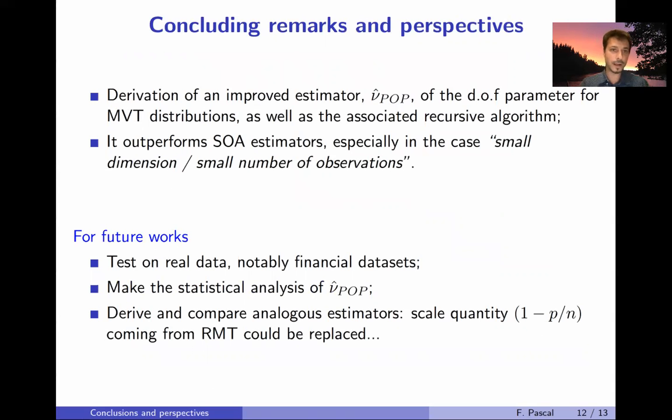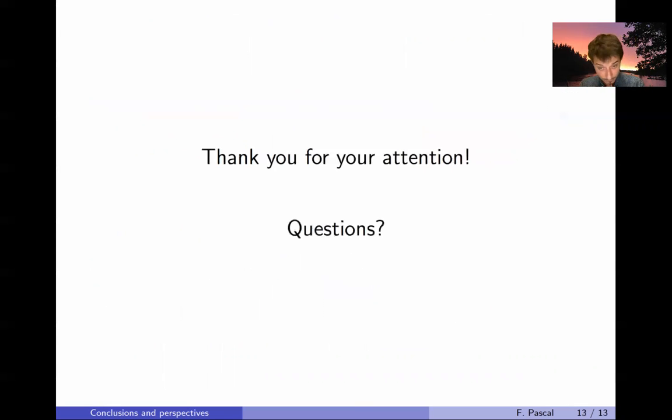So to conclude, in this work we derived an improved estimator of the degrees of freedom parameter for the multivariate T-distribution as well as the associated recursive algorithm. We have shown on few experiments that it outperformed the state-of-the-art estimators, and especially it performs very well in the case of small dimensions and small number of observations. For future work we are testing on real data on financial datasets. We will make the statistical analysis of this estimator and we want to derive and compare analogous estimators. As I said, the scale quantity one minus p over n could be replaced by other ones. So that's it for me for today and I thank you for your attention. I'm ready for answering questions in the session. Thank you very much.